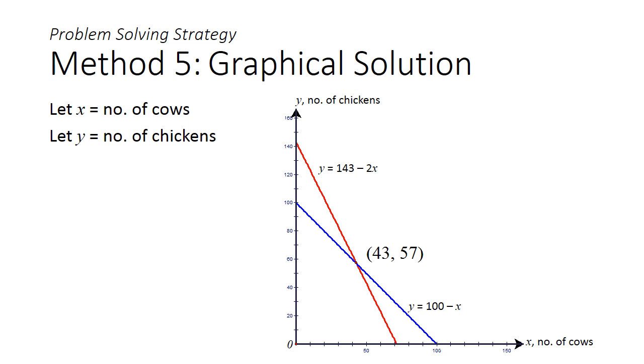Those with way too much free time on their hand could consider method 5, and choose a graphical solution. They plot both lines on a graph paper, find its intersection point, and estimate the number of cows.